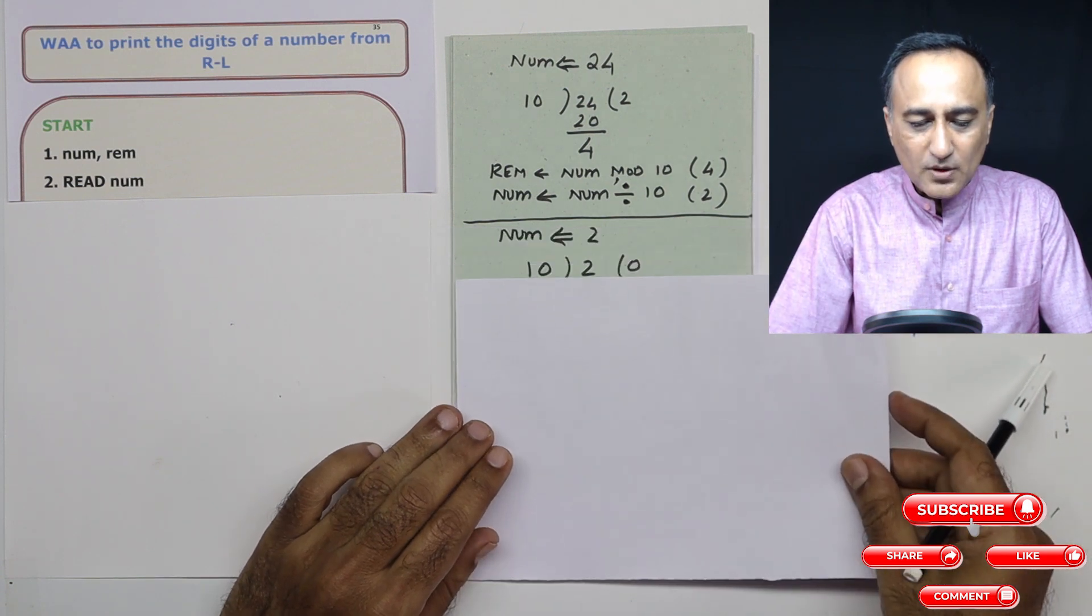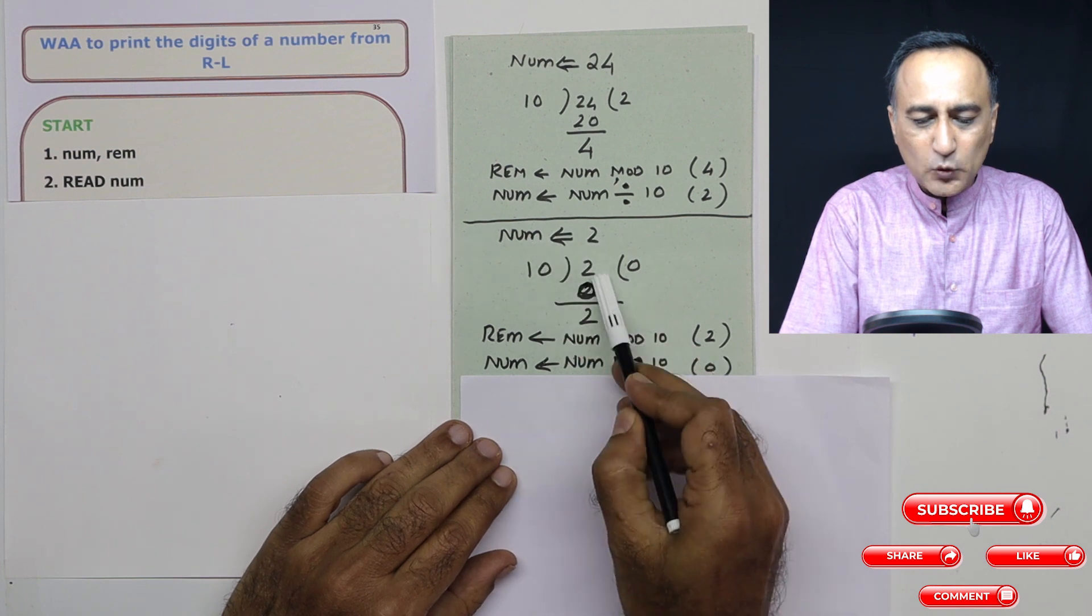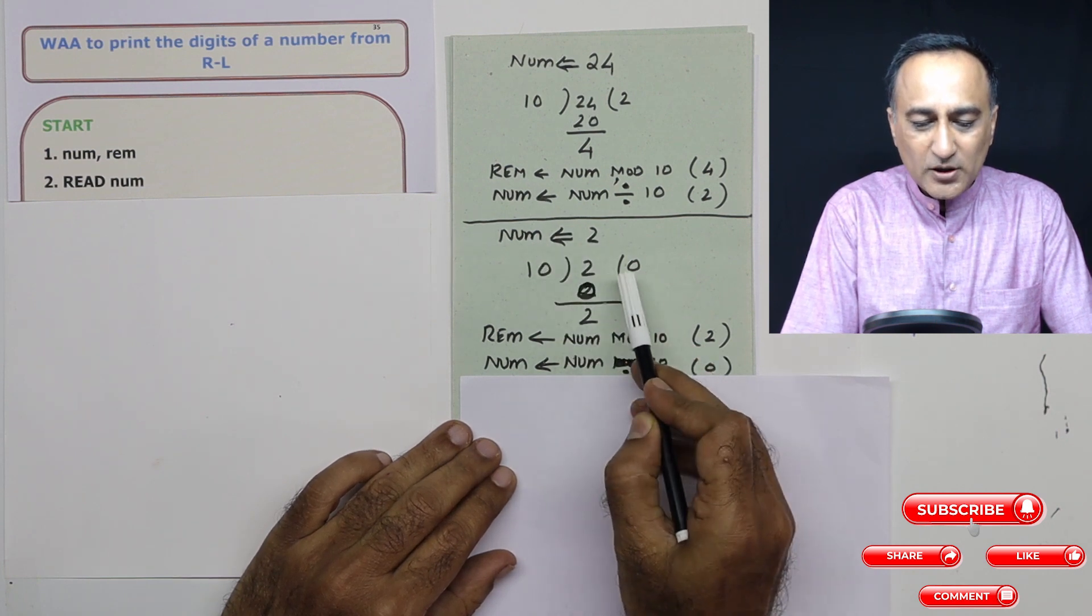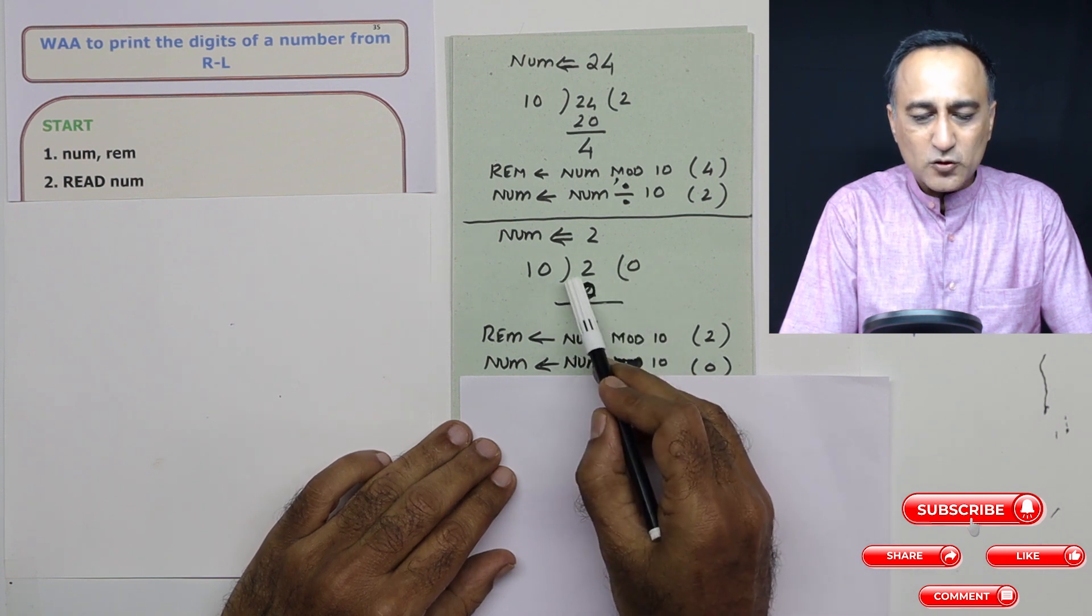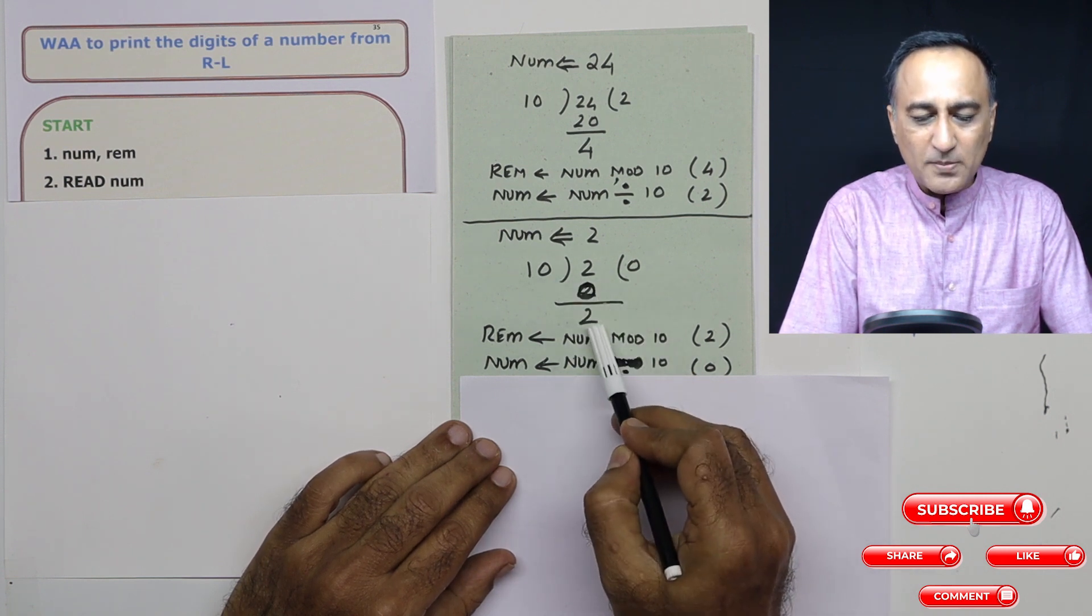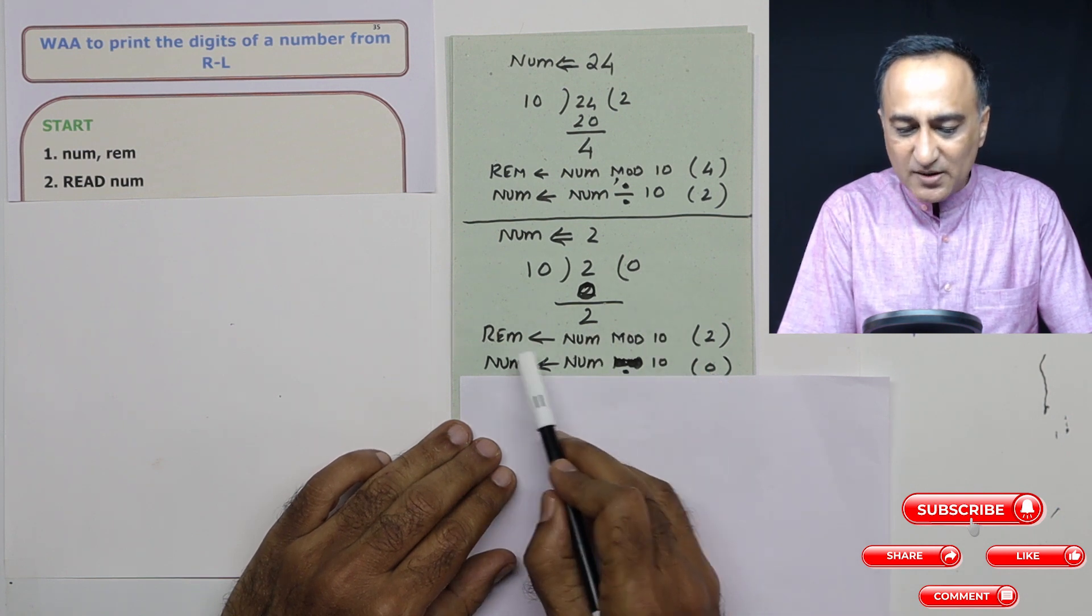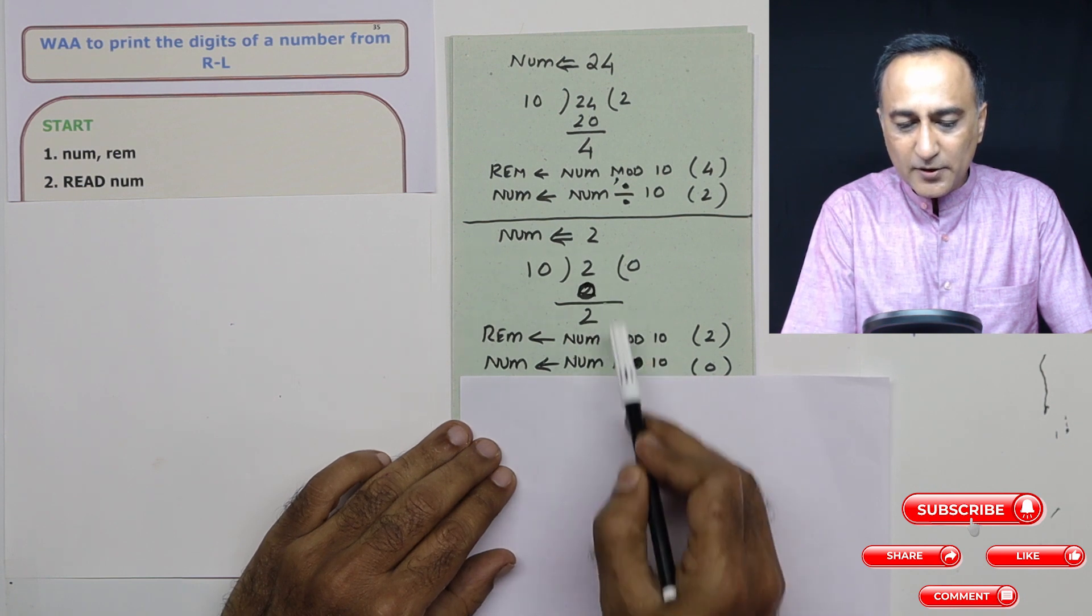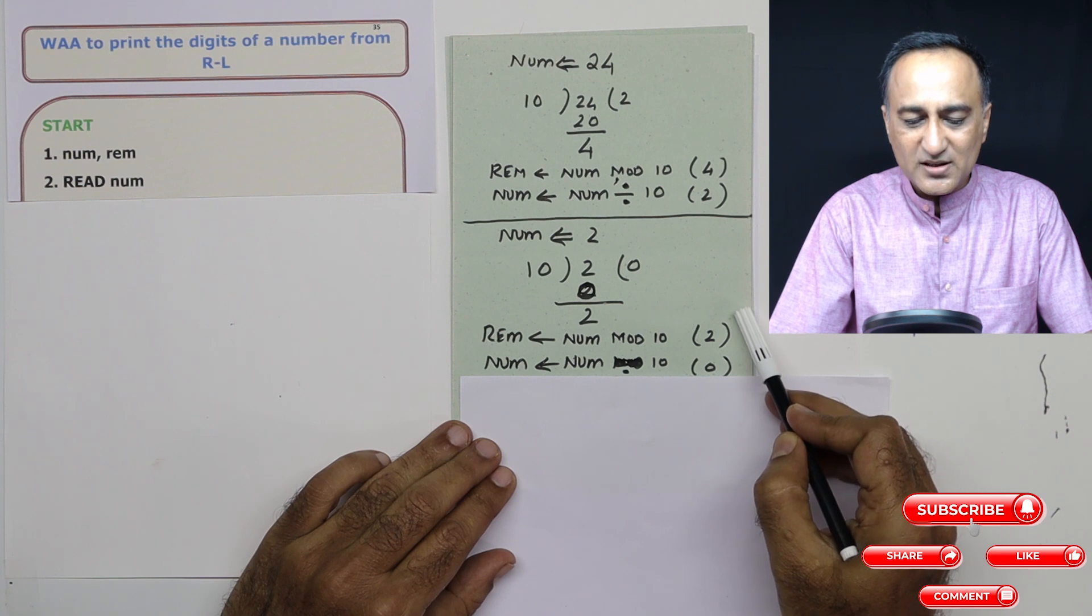Now again, what I do is I take the number 2 and I divide by 10. 2 is not divisible by 10. So 2 remains the remainder and 0 is the quotient. So next time when I say remainder is number mod 10, 2 mod 10 happens to be 2. So I print after 4, I print 2 on the screen.